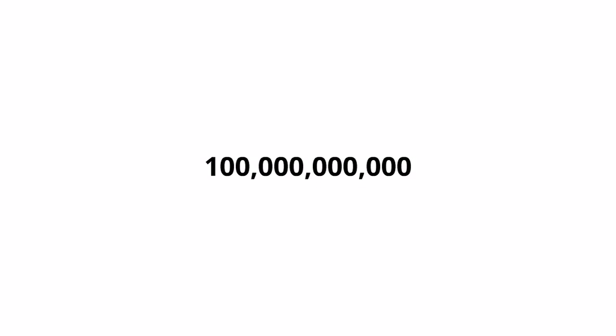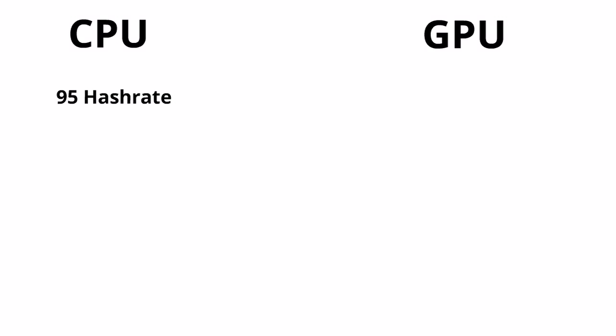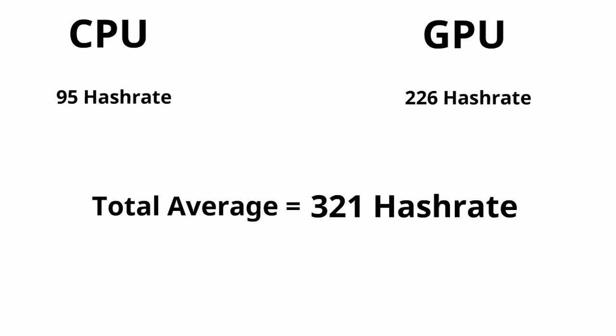As I'm sure you know, a hash rate is how many attempts your computer makes to solve the complex blockchain math problems per second. After looking over the video clips, we see that we've got about a 95 hash rate with the computer's CPU on average, and about a 226 hash rate with the computer's GPU on average. This creates about a 321 average hash rate overall.